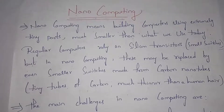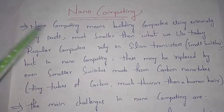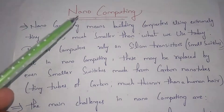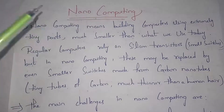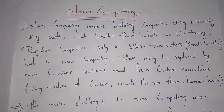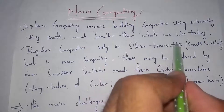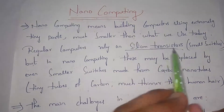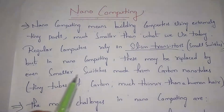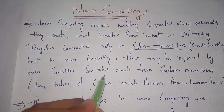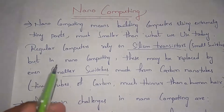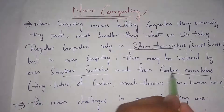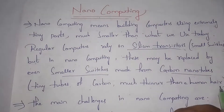Next I will explain what is nano computing. The meaning of nano is very very small. Nano computing means building computers using extremely tiny particles, much smaller than what we use today. In nano computing we will build computers by using very tiny particles. Normally our regular computers depend on silicon transistors — small switches — but in nano computing we will use even smaller switches, and these switches are made up of carbon nanotubes and are even smaller than a human hair.